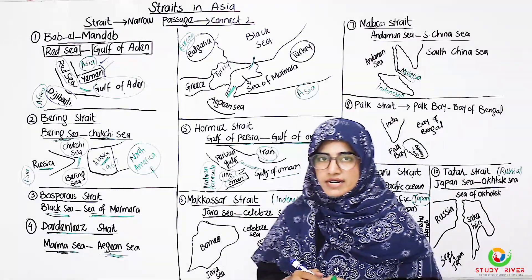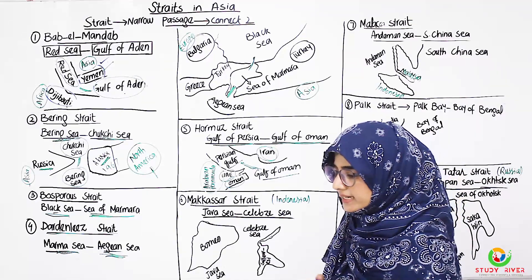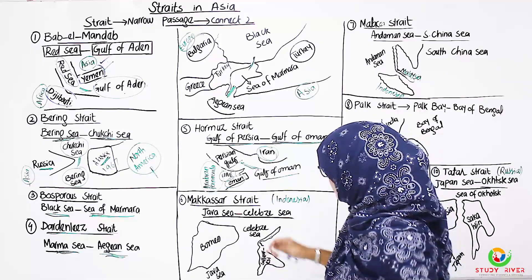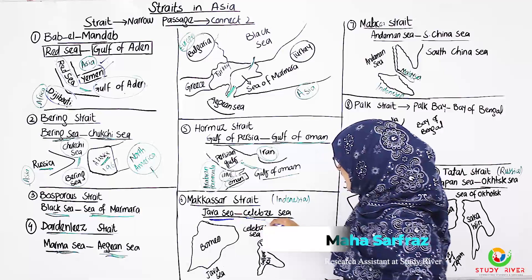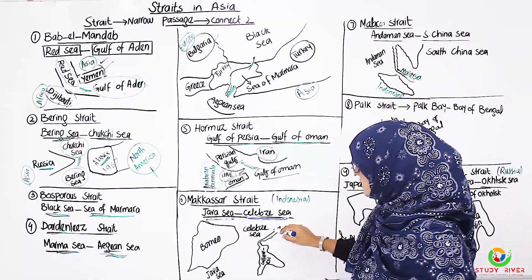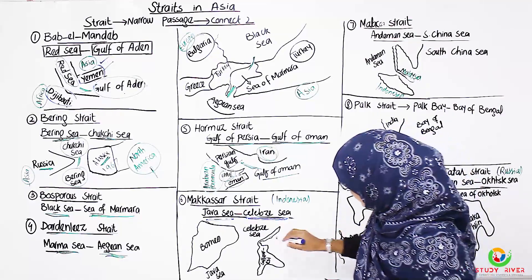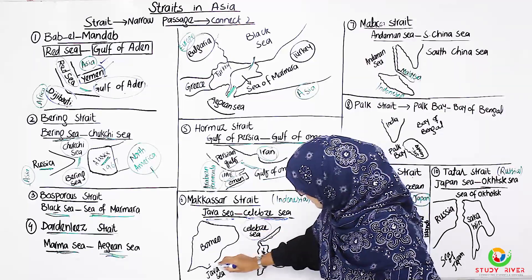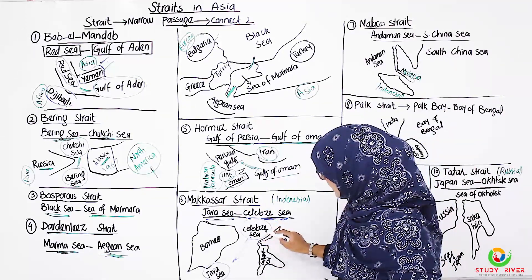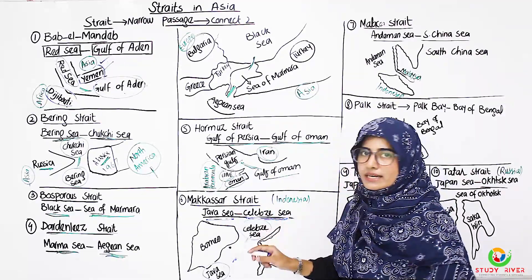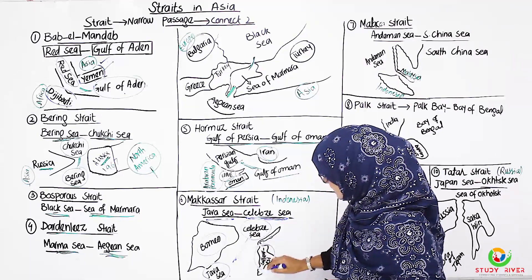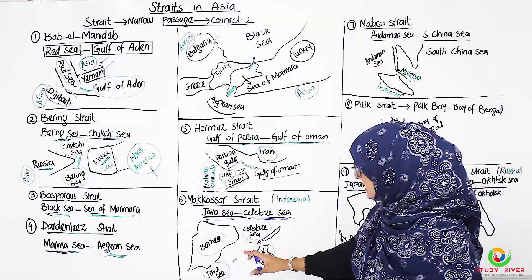The sixth strait is the Makassar Strait, located in Indonesia. Looking at which two water bodies it connects: one is the Java Sea and the other is the Celebes Sea. The Makassar Strait is a narrow strip of water between the Celebes Sea and the Java Sea. The land masses on either side are Borneo island and Sulawesi island, Indonesia.